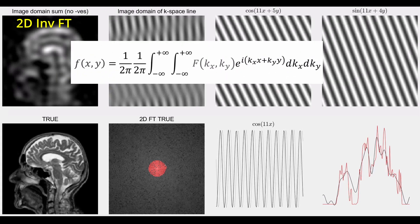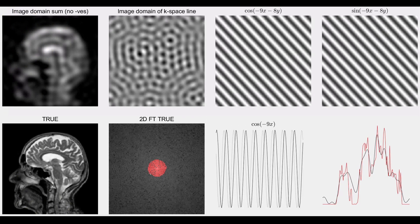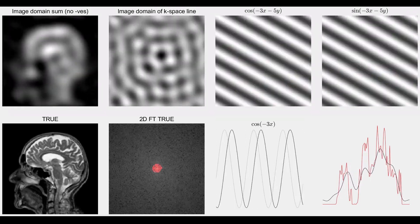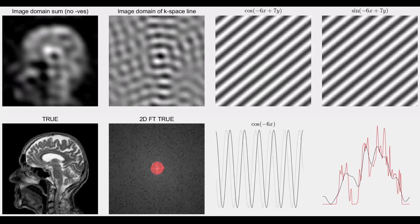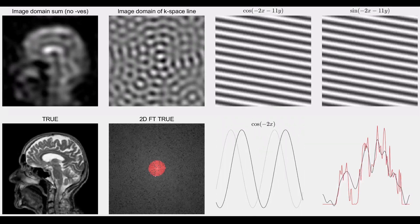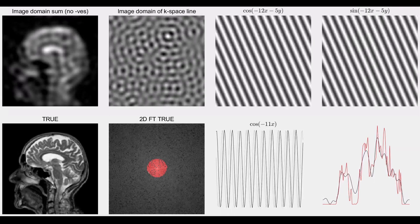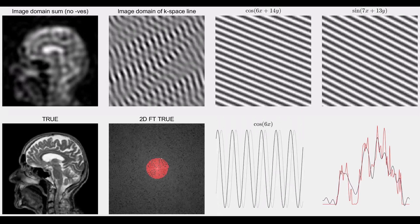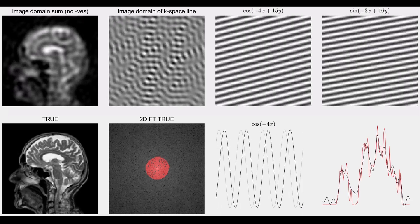You'll also notice there is an orbiting little dot going around that red circle, and that is showing us the current KX, KY coordinates that we are looking at in the 2D K-space. As that KX, KY coordinate changes, as we move around that circle, that corresponds to a different spatial frequency KX and a different spatial frequency KY.